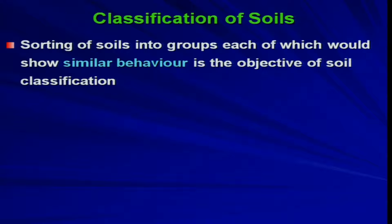What is the classification of soil and what is the objective of classification of soil? The sorting of soils into groups, each of which would show similar behavior, is the objective of soil classification. Soil classification makes groups of particular types of soil which will behave very similarly within a group but show completely different characteristics than other groups. This is the basic objective — sorting soil based on a scientific method.